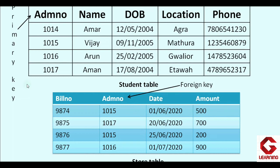Admission number cannot be the primary key in the store table because if the same student purchases from the store repeatedly, their admission number will appear multiple times — so repetition is possible. Similarly, the date column cannot be the primary key because multiple students may purchase on the same date. The amount column also cannot be the primary key since two students may purchase the same amount. Therefore bill number, which is unique for every record, is the primary key in the store table.